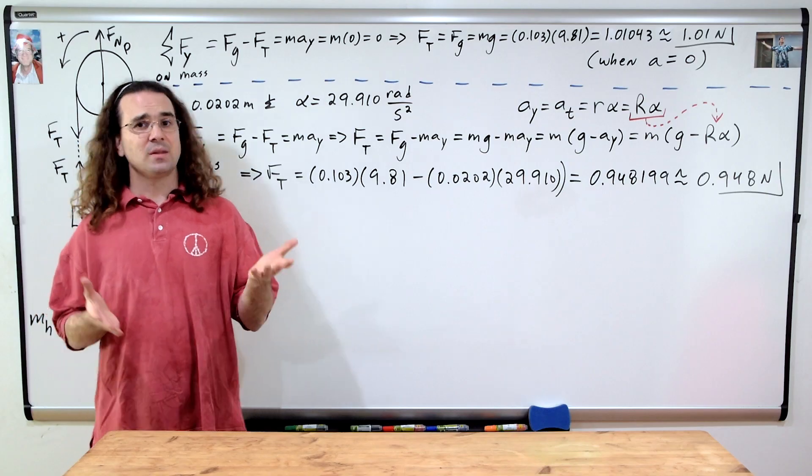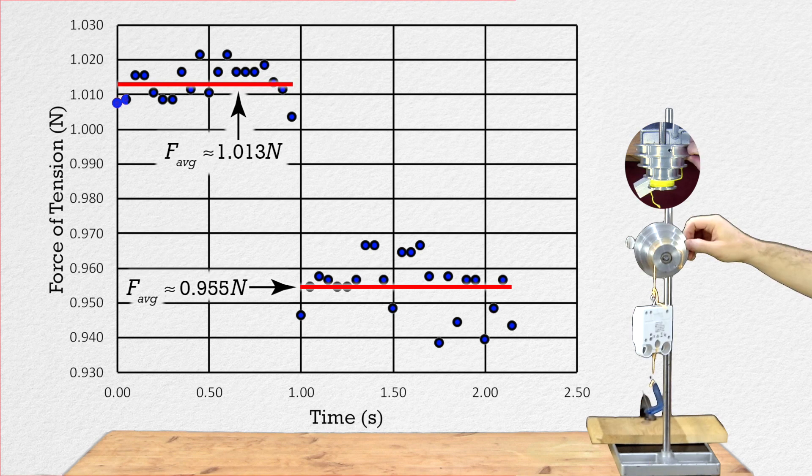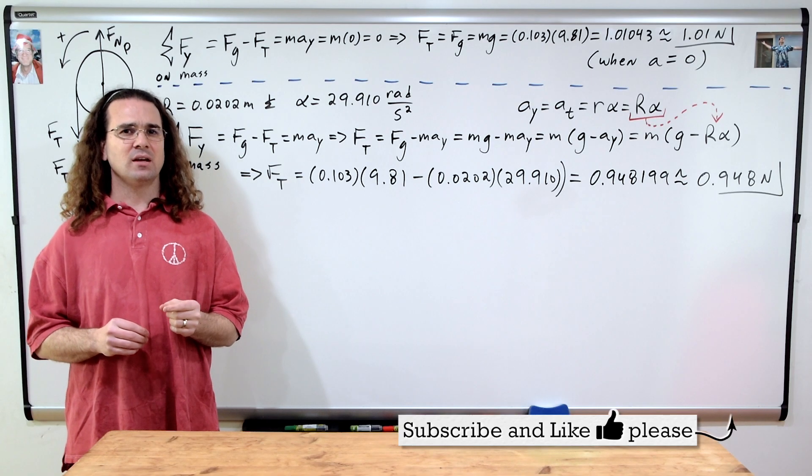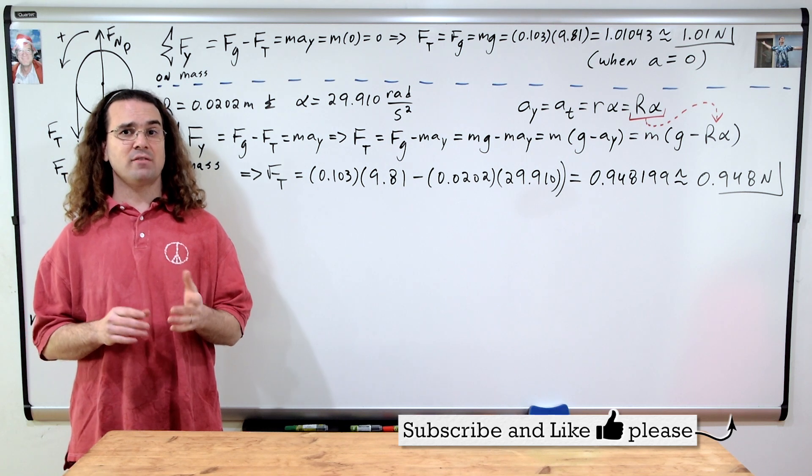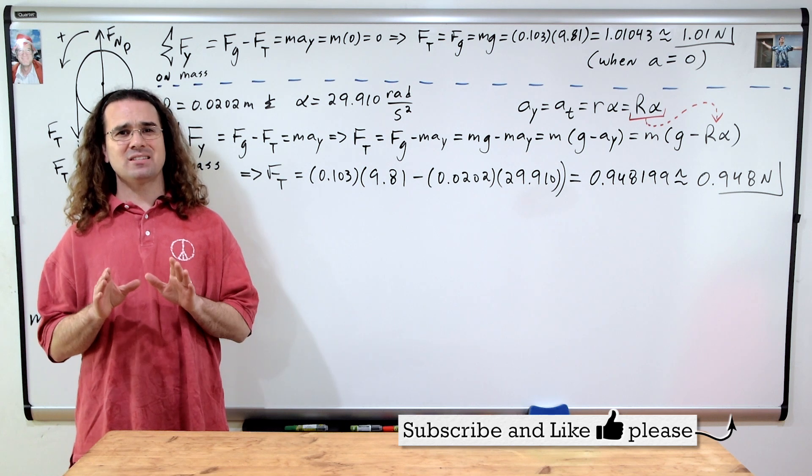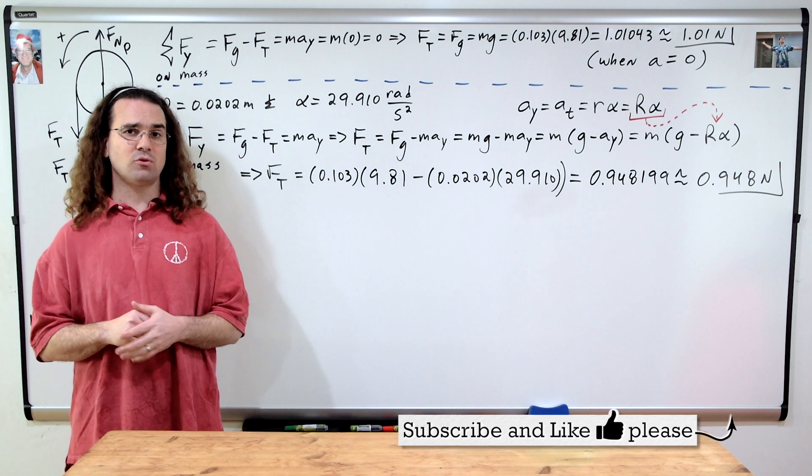Thanks Billy. Our average force of tension, while the system is accelerating, measures out to be 0.955 newtons, which I would consider to be very close to the predicted force of tension of 0.948 newtons. So, please realize the force of tension in the string depends on the acceleration of the hanging mass or the angular acceleration of the pulley. As soon as the system is allowed to accelerate, the force of tension in the string decreases.